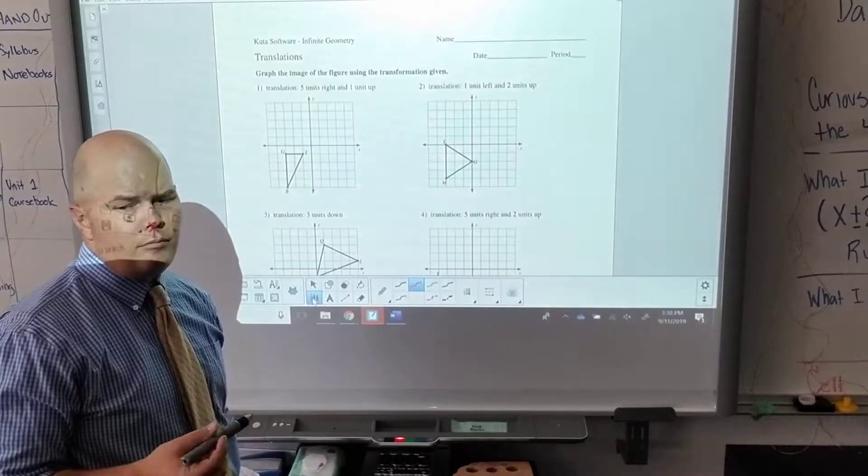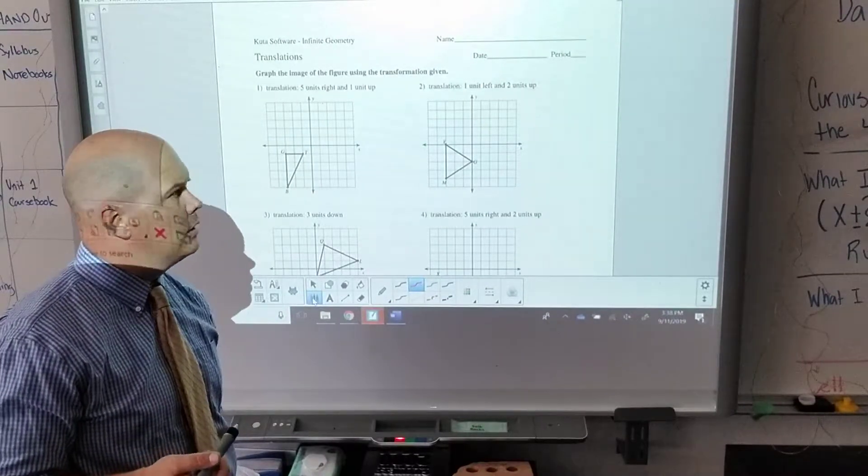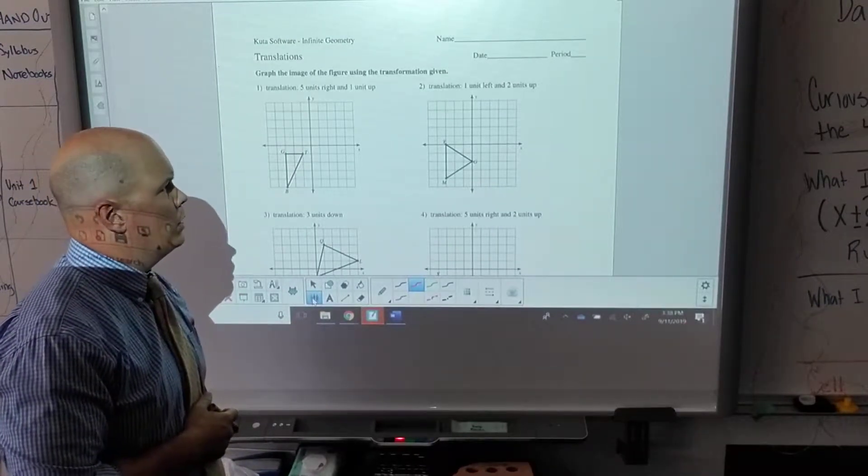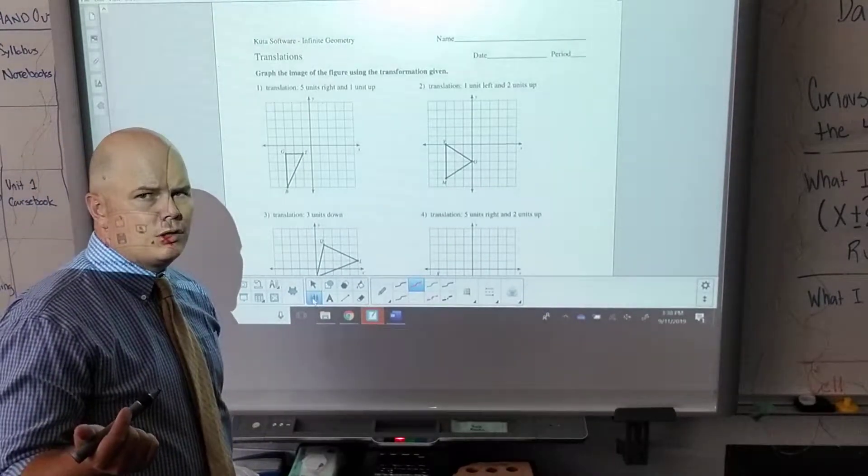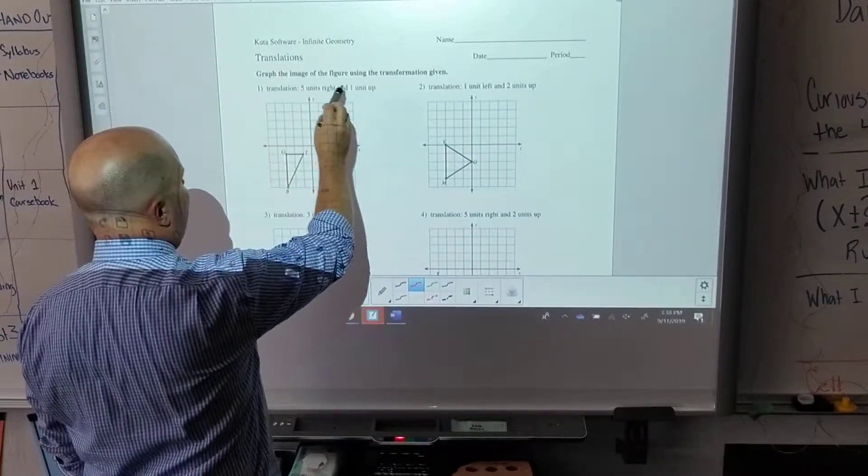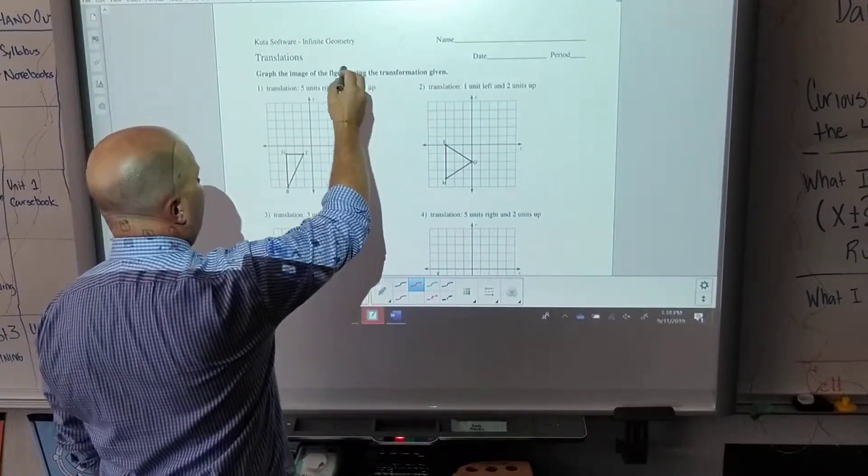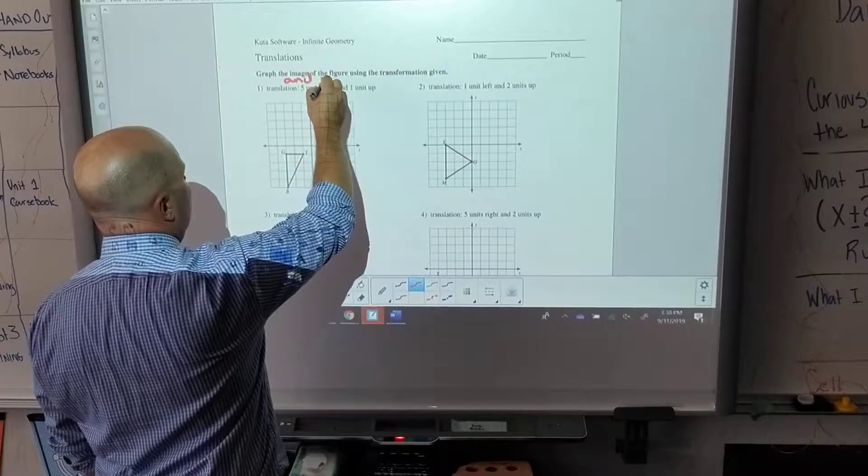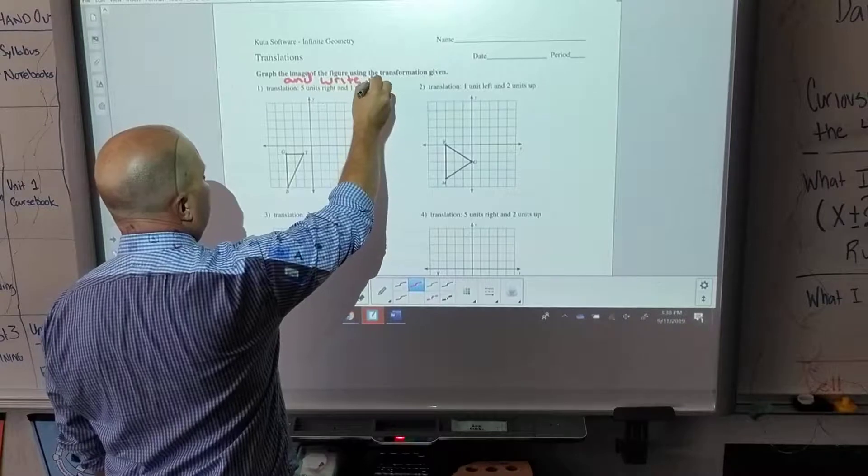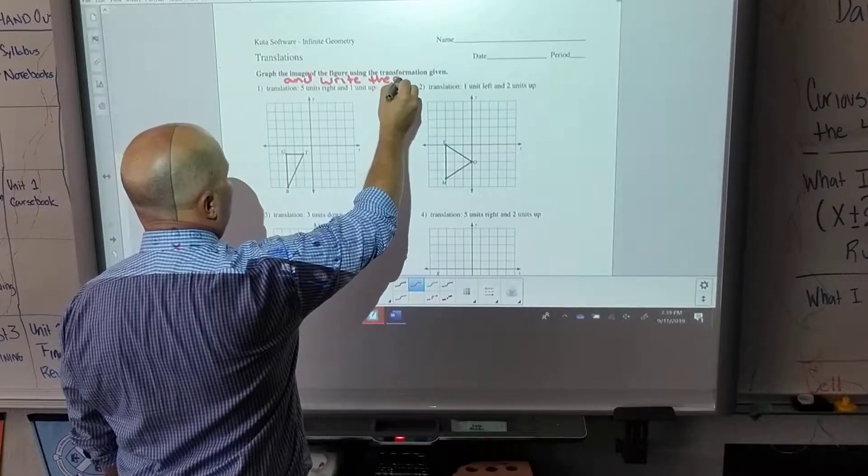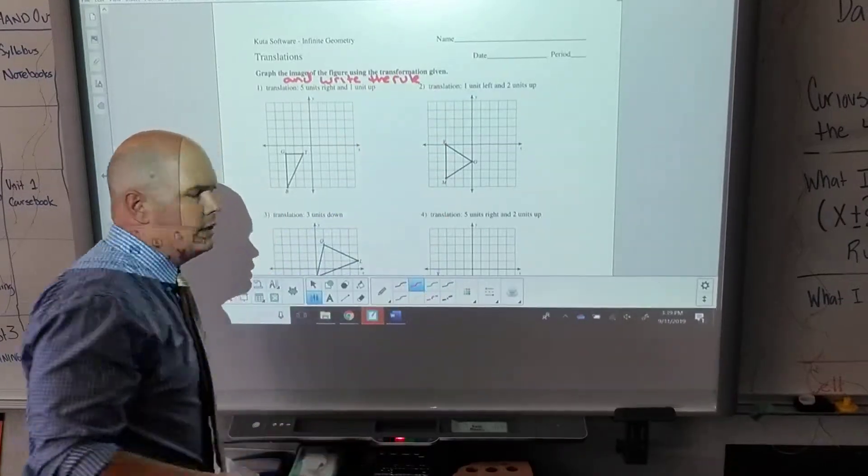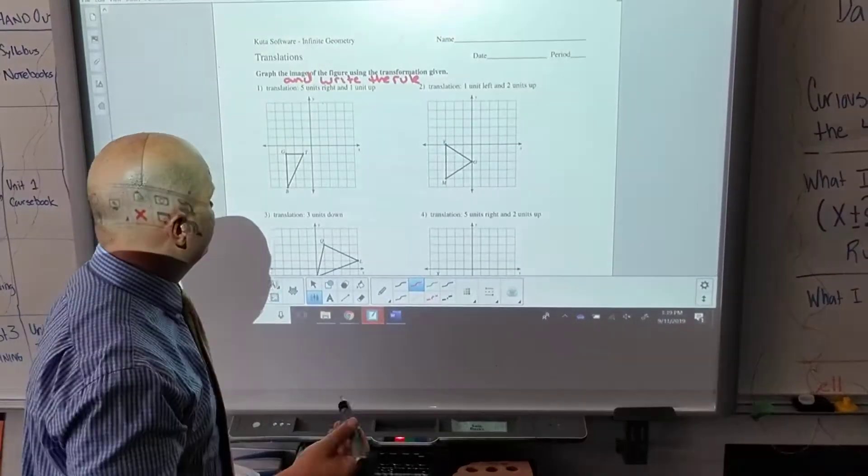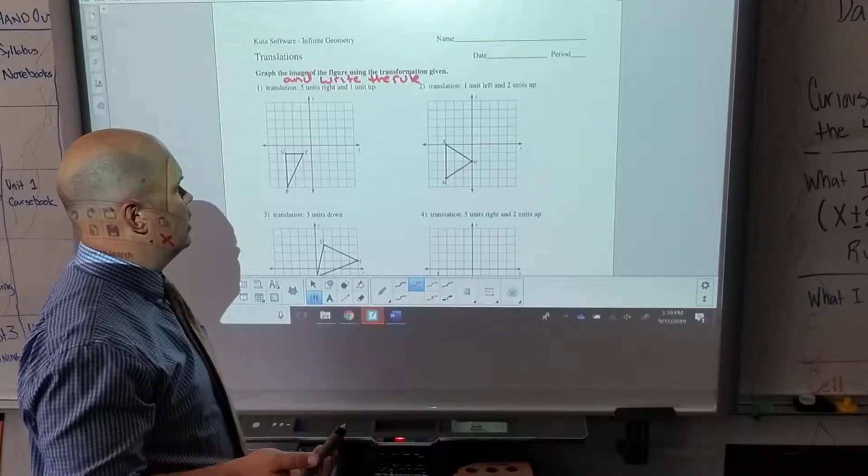It's the first problem in your packet. It says translate five units to the right and one unit up. Now the first thing I want you to do is where it says graph the image of the figure, I want you to write the rule. While graphing it's great, I also want to see that you can interpret the rule.